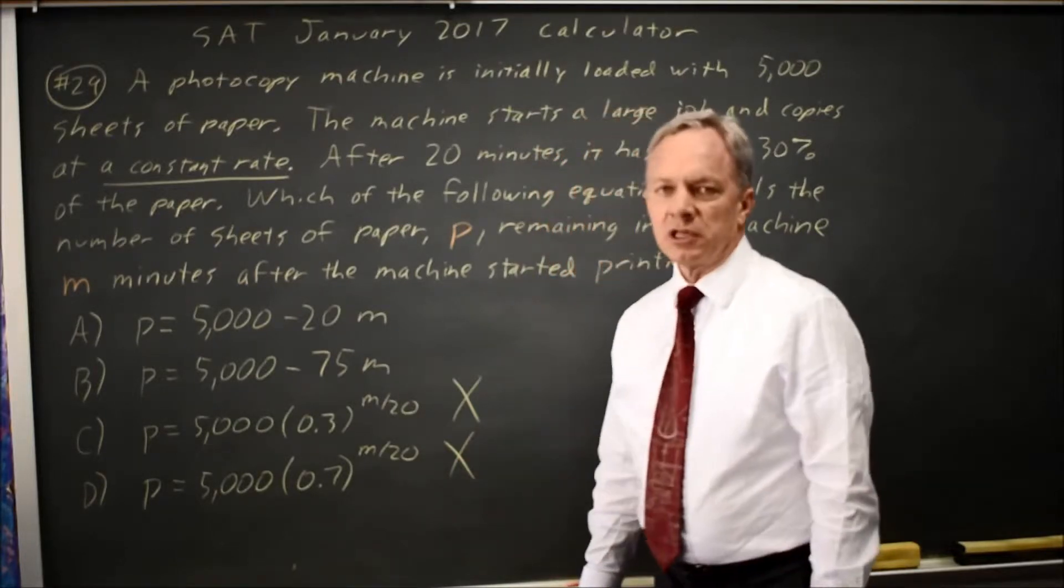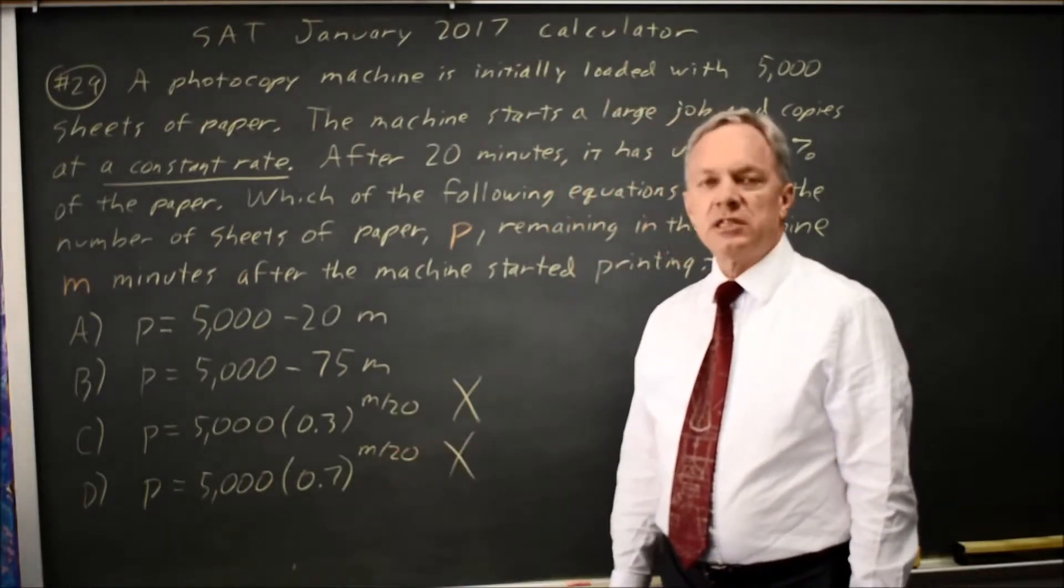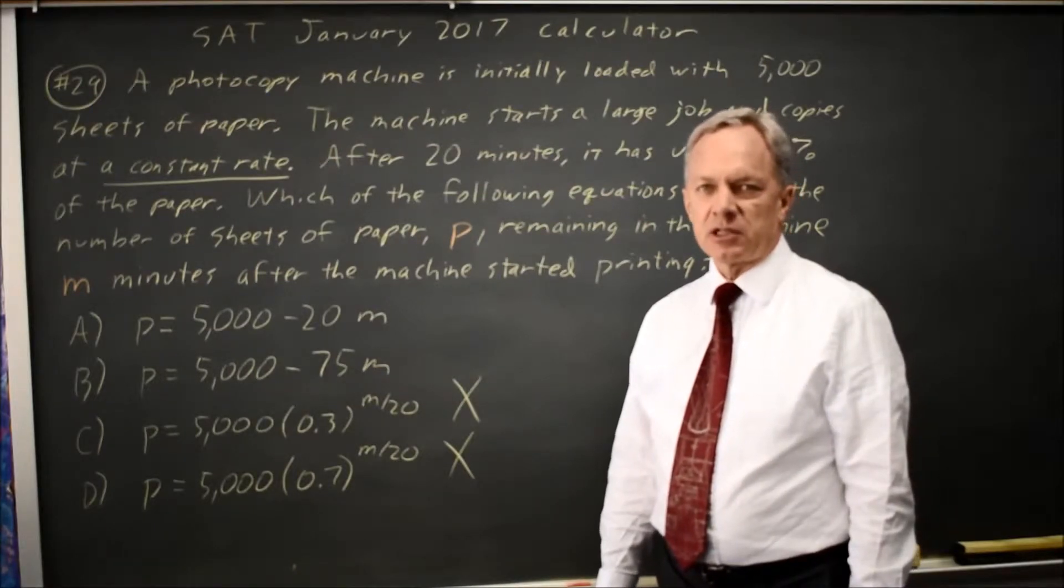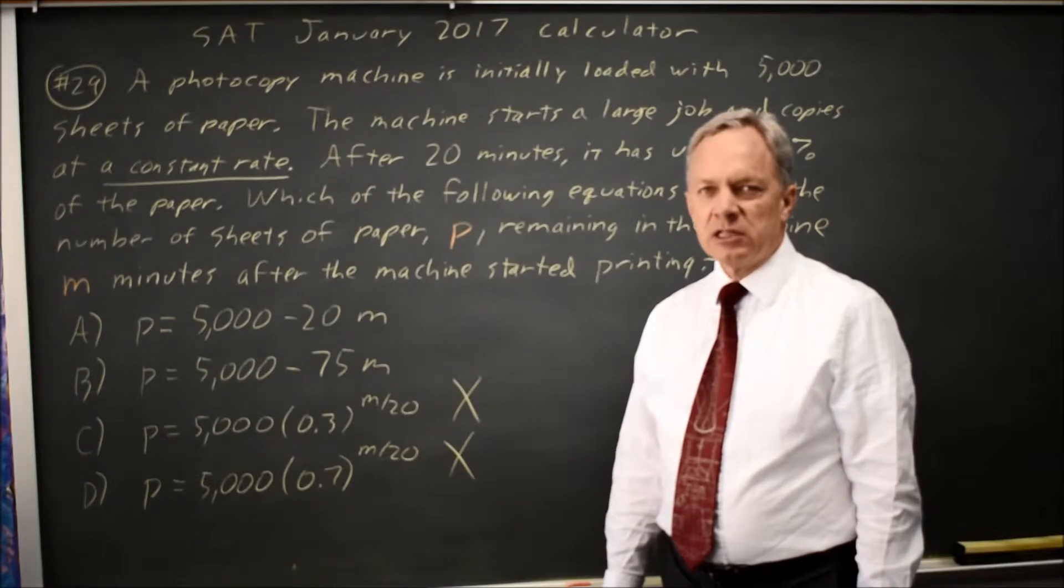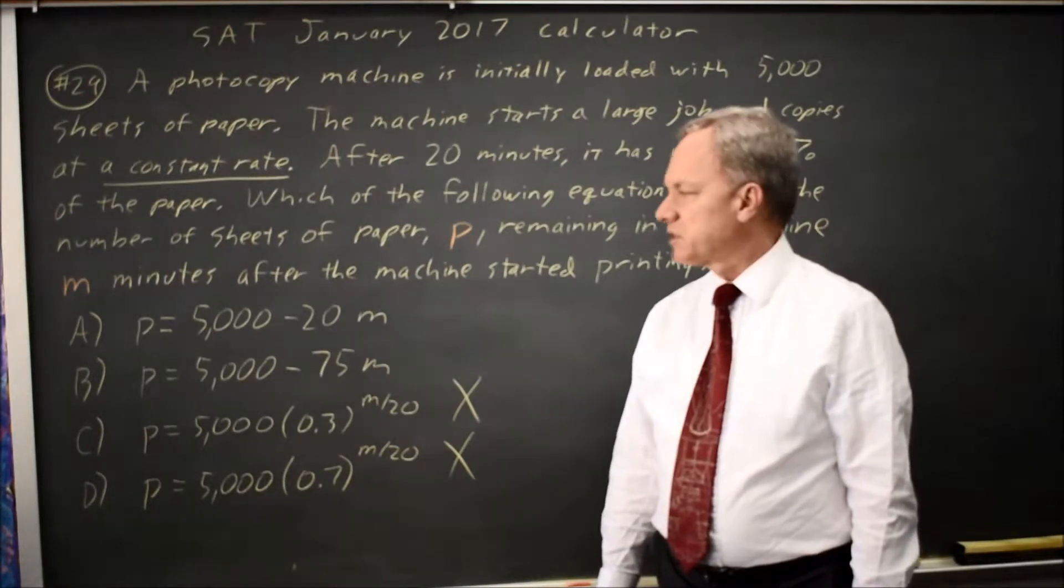If you were looking for an exponential model, choice D matches the values at time 0 and at time 20 minutes, but it does not match the statement that we're copying at a constant rate.